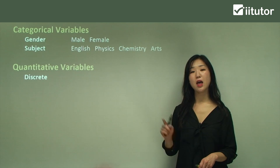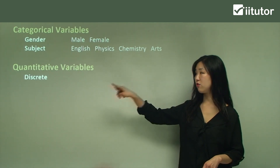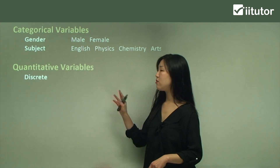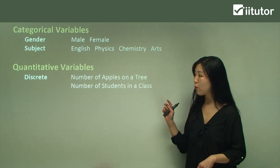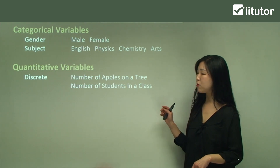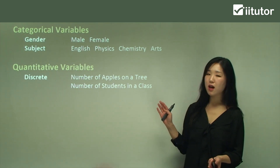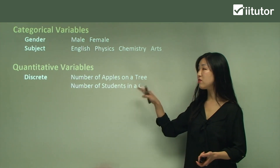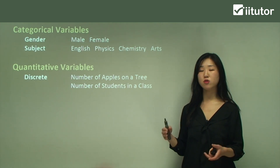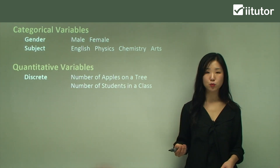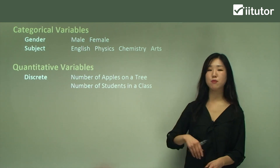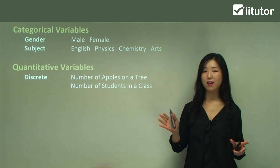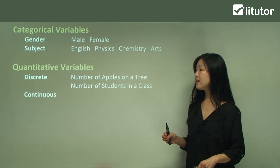Now quantitative variables can be discrete. The first subcategory I'll introduce is discrete variables. Quantitative discrete variables are countable — for example, the number of apples on a tree or the number of students in a class. We can count both of those, so they are discrete quantitative variables.